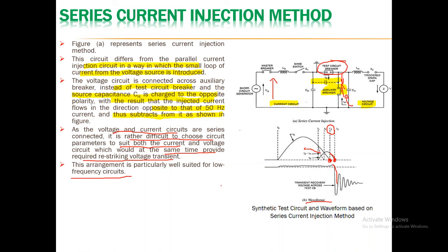This is about the series current injection method and the parallel current injection method — in short, it is all about synthetic testing. Synthetic testing is usually done on the circuit breaker to check its performance under the presence of short circuit current as well as under the presence of transient voltages. This concludes the discussion on the testing of circuit breakers. Thank you.